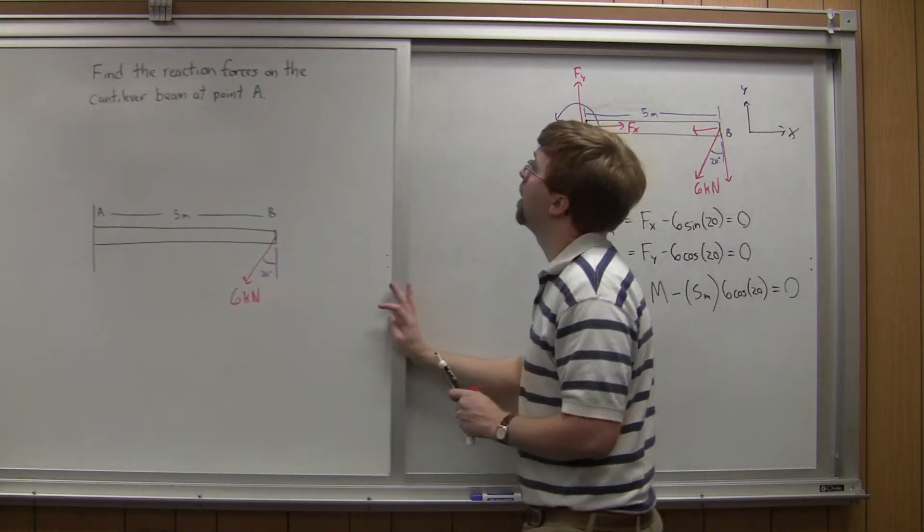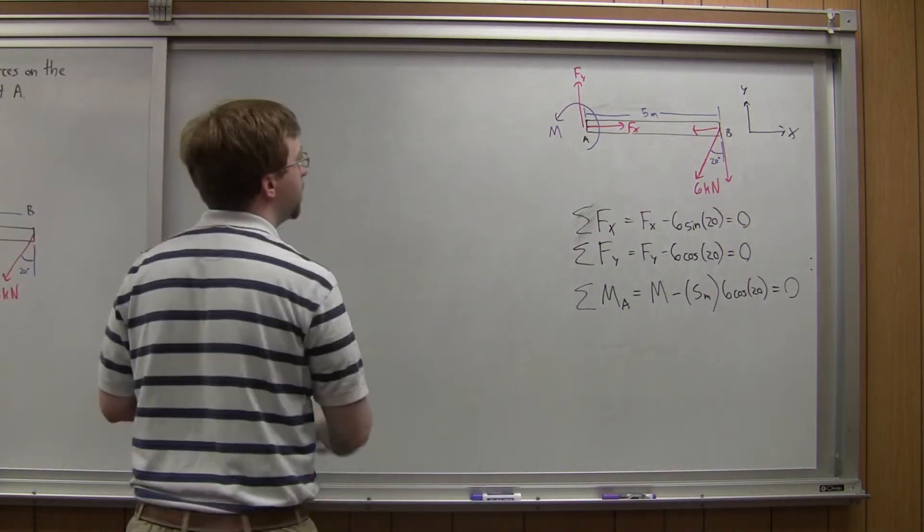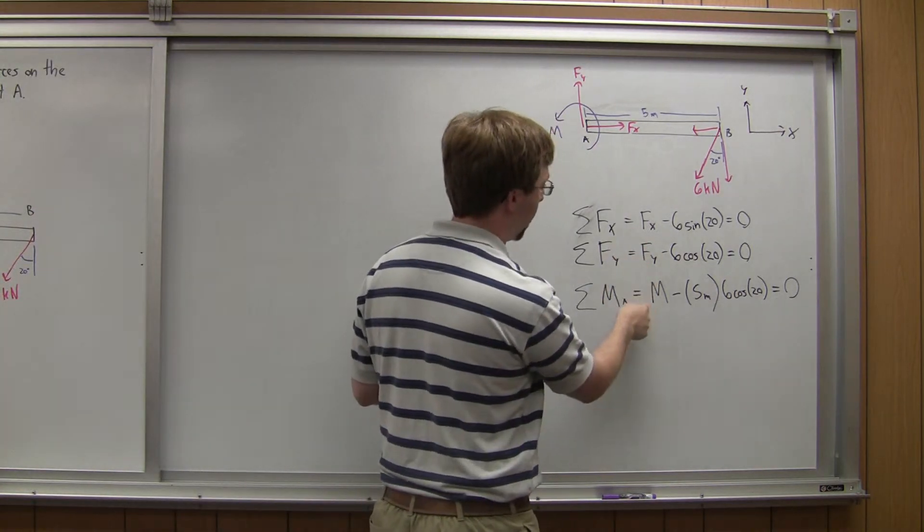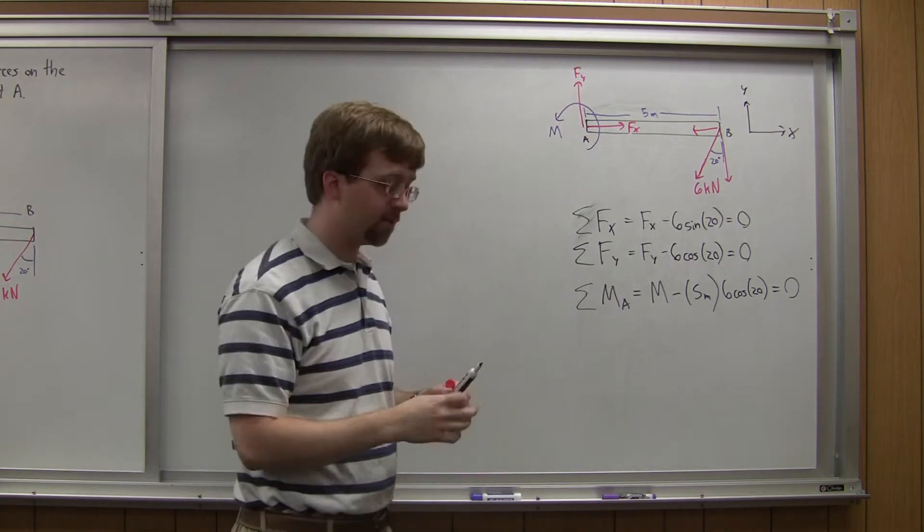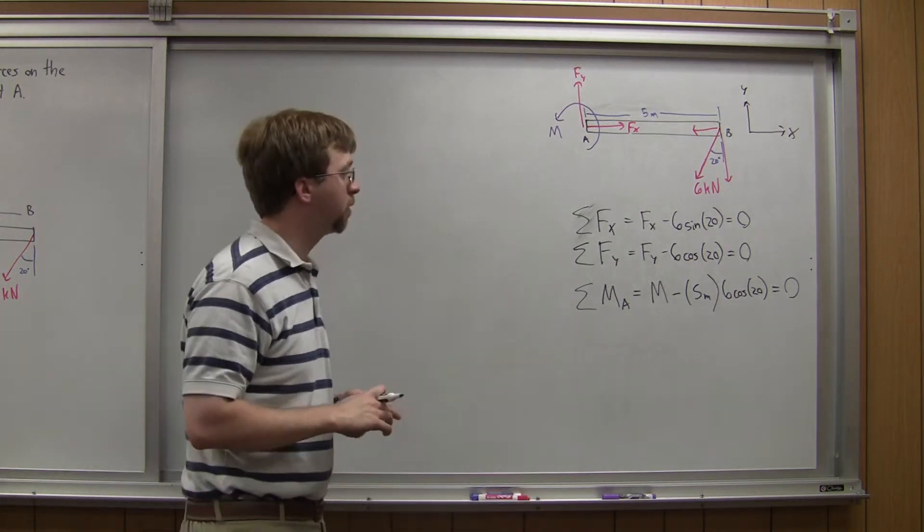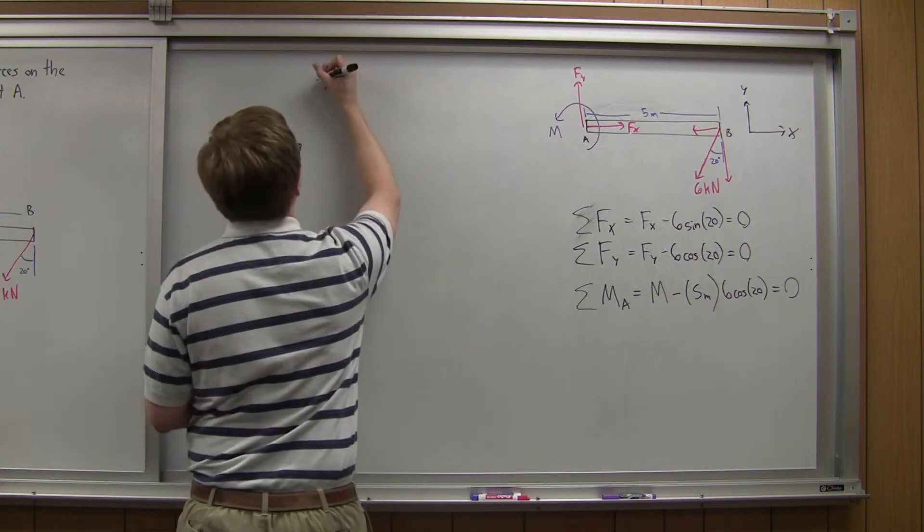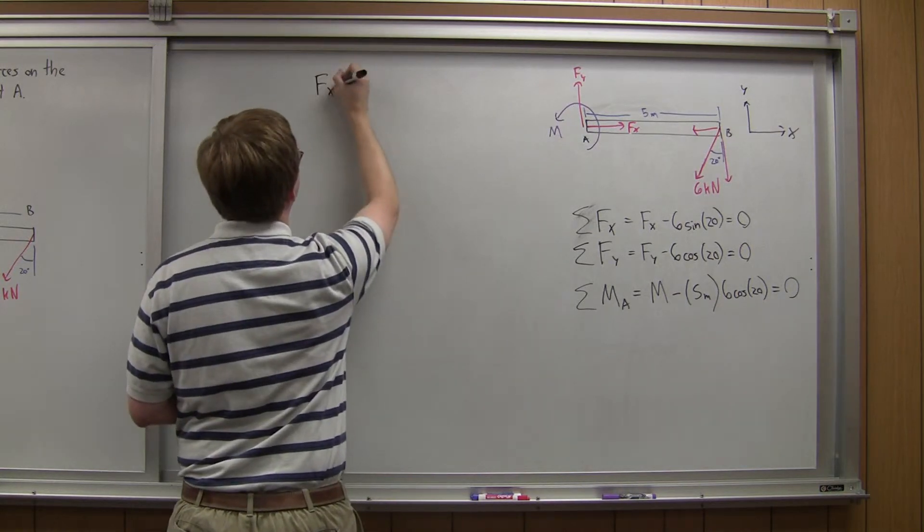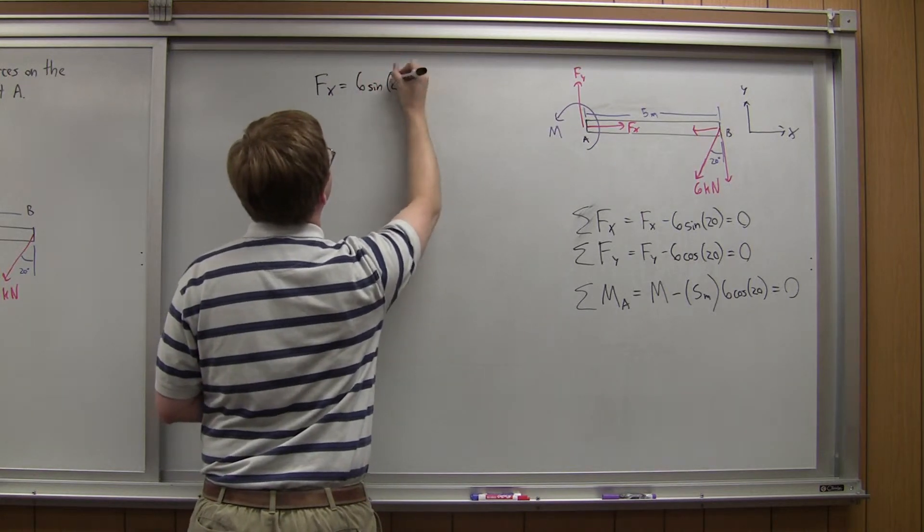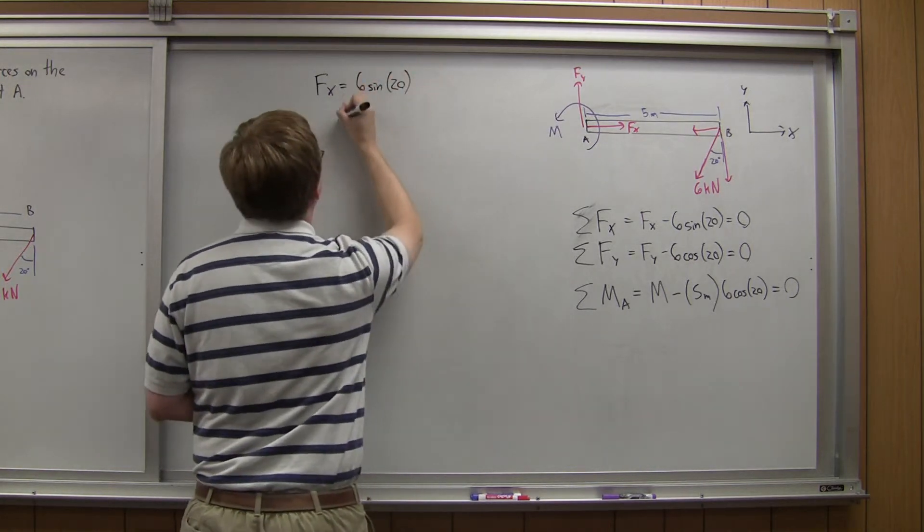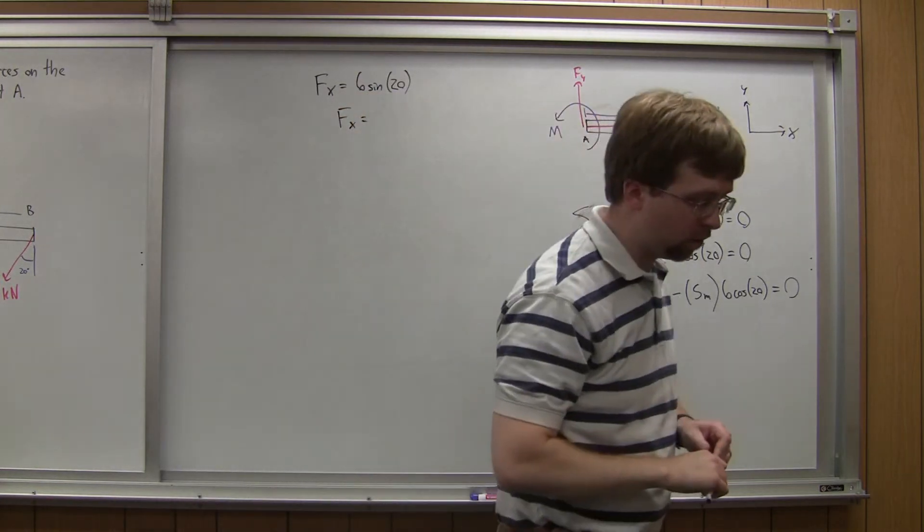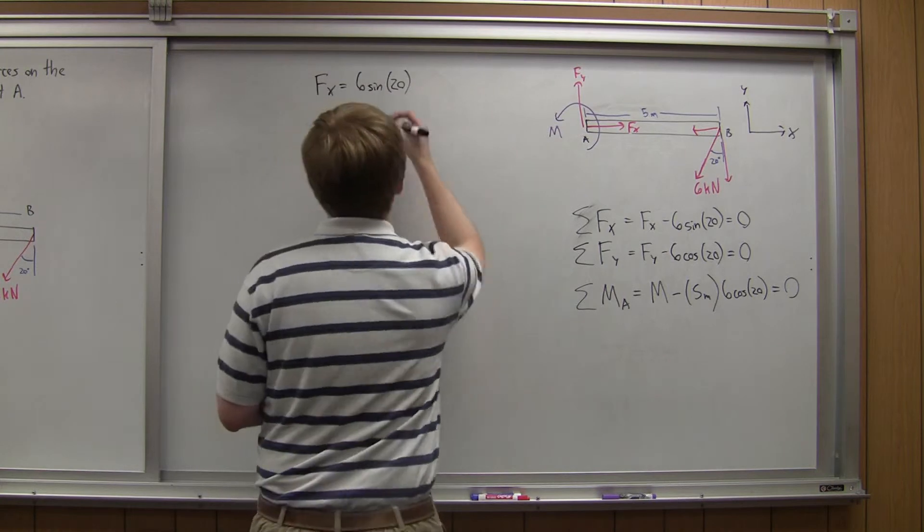Let's move this board out of the way. We've got three equations and we've got three unknowns: Fx, Fy, and M. We should be able to solve for all of these. And it's actually pretty simple. There's only one unknown per equation. Fx will be equal to 6 times the sine of 20 degrees. Fx ends up being equal to 2.05 kilonewtons.